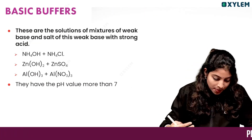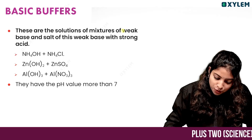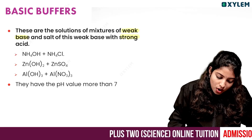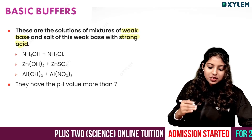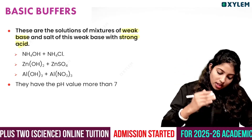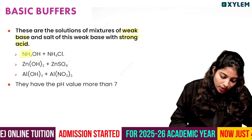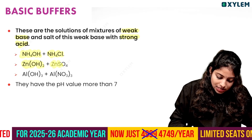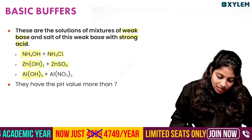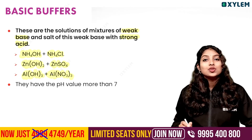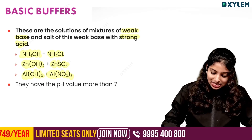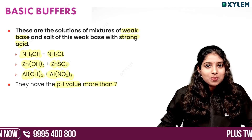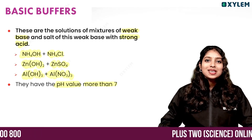These are Basic Buffers — solutions of mixtures of a weak base, a strong acid, and the salt of the weak base with a strong acid. Examples: NH4OH / NH4Cl, Zn(OH)2 / ZnSO4, Al(OH)3 / Al(NO3)3. Basic Buffers have a pH more than 7.